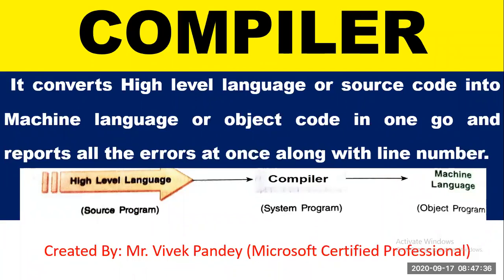High-level language code is also called source code, and machine-level language code is also called object code. So the compiler converts source code into object code in one go, and reports all the errors at once along with line number.